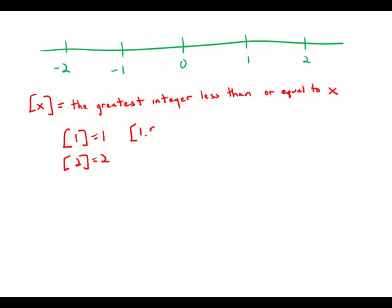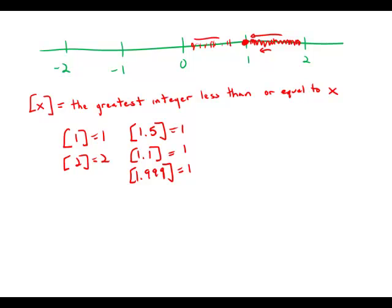If we took x-bracket of 1.5, the greatest integer that is less than 1.5 is 1. If we took the greatest integer of 1.1 or 1.999, all of these we would have to round down to the greatest integer less than them, which is 1. So this whole piece of real estate between 1 and 2 gets rounded down to just 1. The whole piece of real estate between 0 and 1 gets rounded down to 0, and so forth. Every integer section of real estate gets rounded down to the integer to the left of it on the number line.